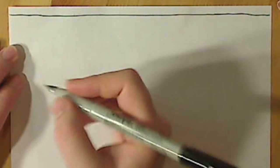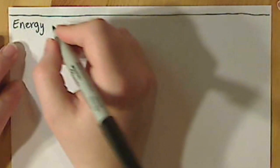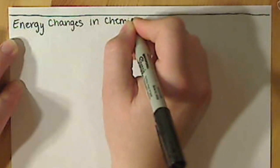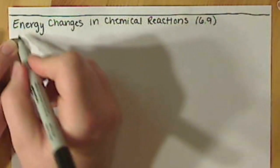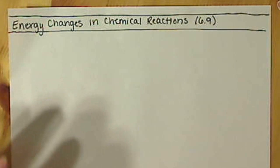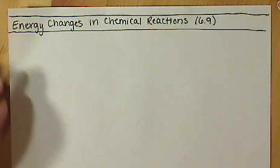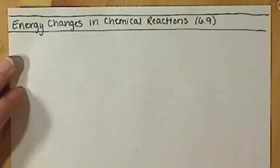This last section for chapter 6 is going to combine concepts from chapter 2 with chapter 6, in that we are going to look at the energy changes in our chemical reactions. All of our chemical reactions are going to involve some sort of transfer of energy. Sometimes reactions are going to give off heat to their surroundings, so they're going to feel hot. Some are going to absorb heat from their surroundings, so they're going to feel cold. We have different concepts for when we give off energy versus when we absorb energy.